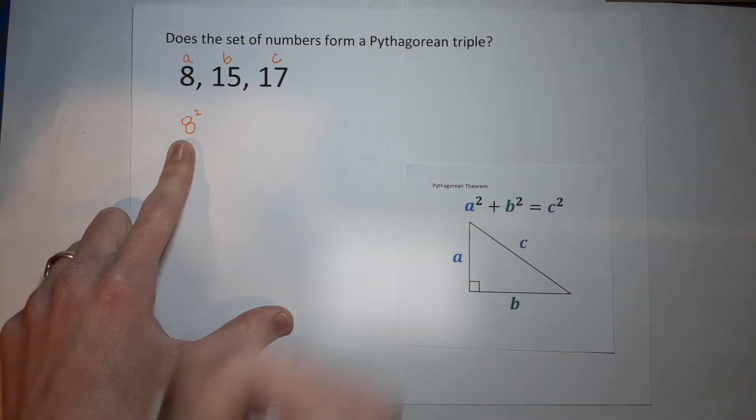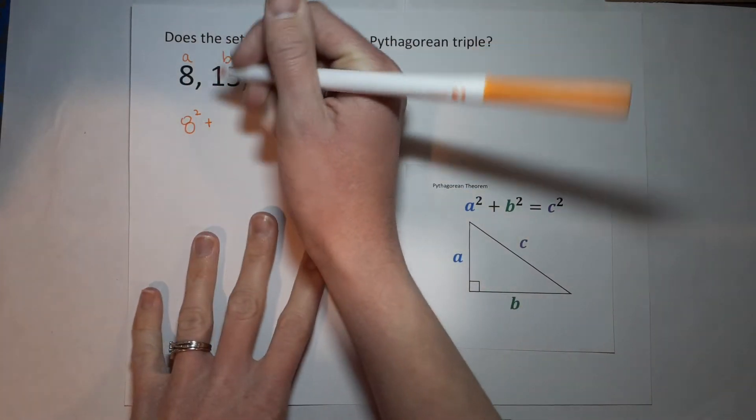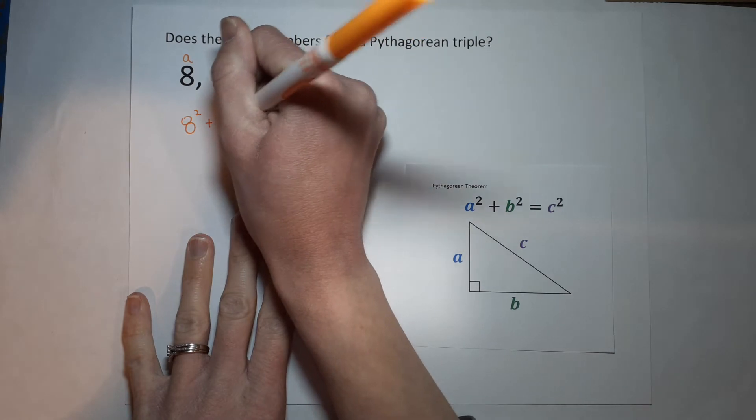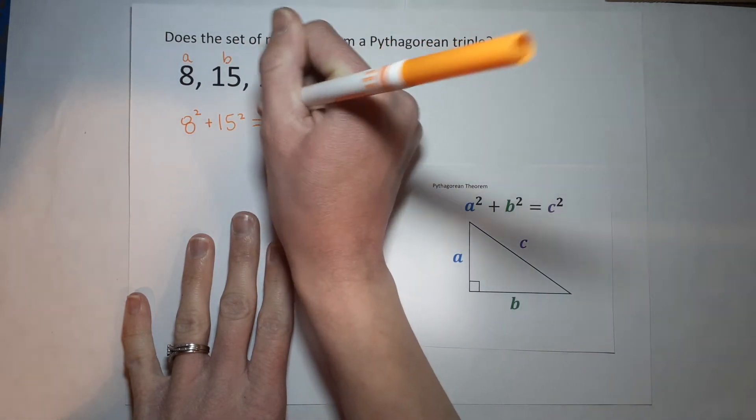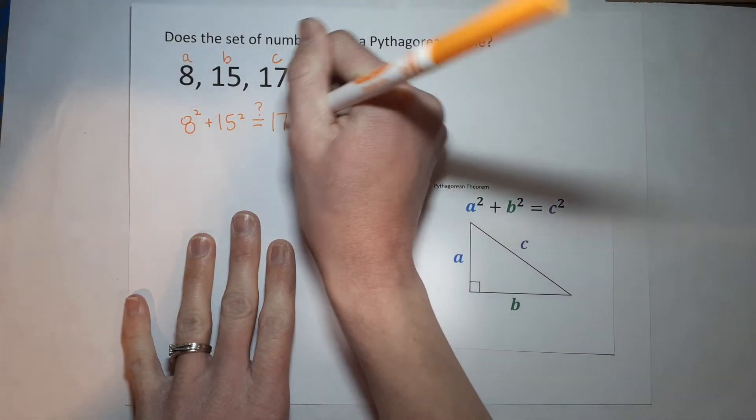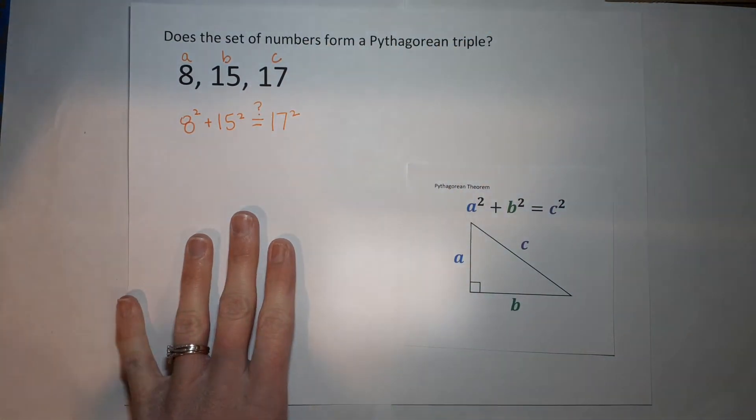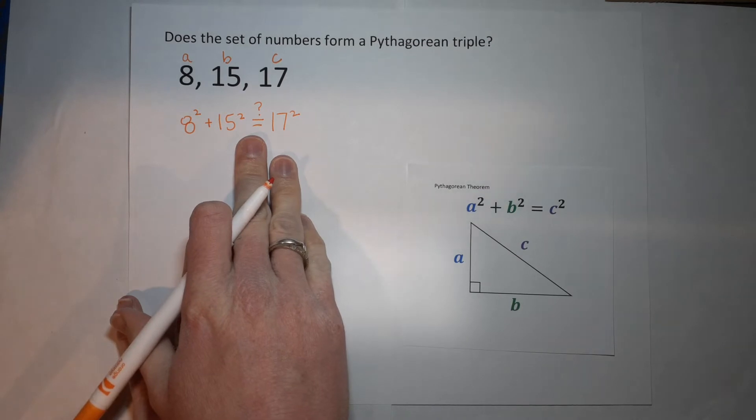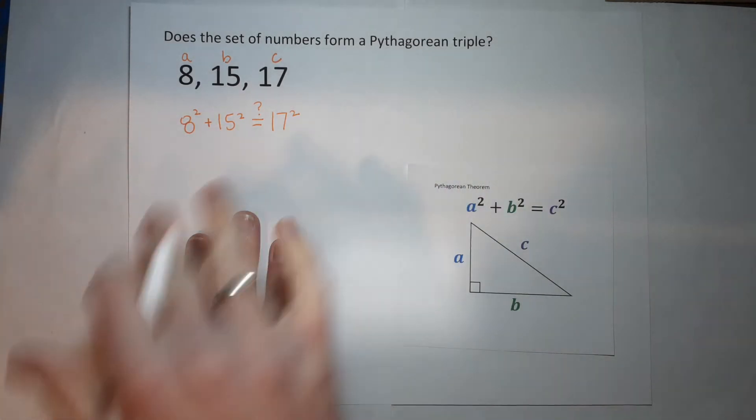A squared is 8 squared plus B squared is 15 squared. We are seeing if that equals, so I put a little question mark up there, does that equal 17 squared? That's what we're trying to figure out. If it does equal that, it's a Pythagorean triple. If it doesn't, it's not.